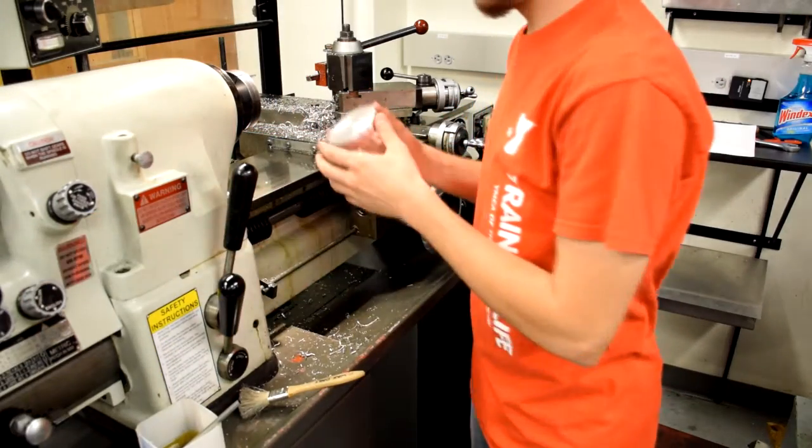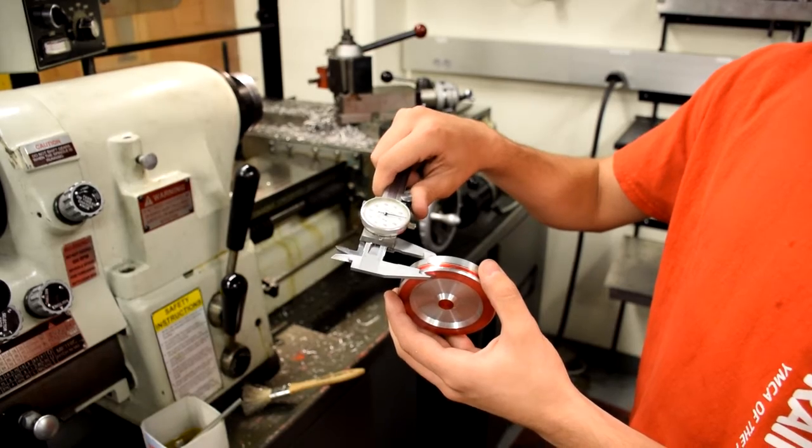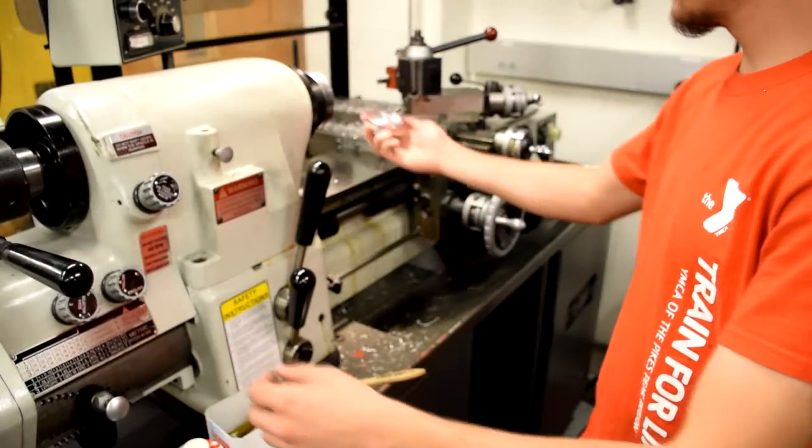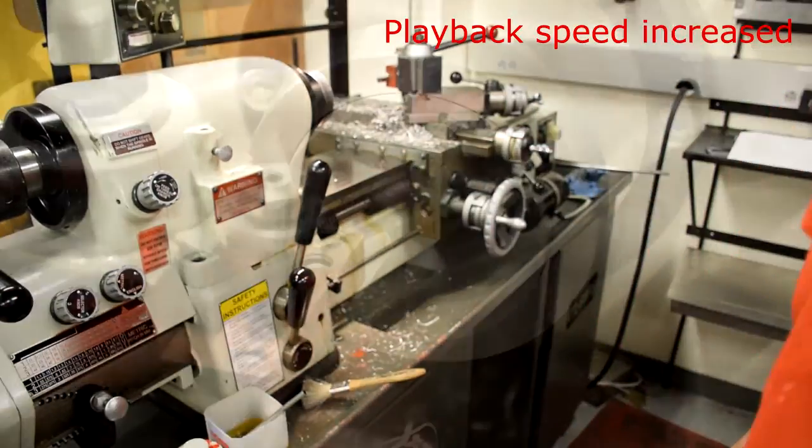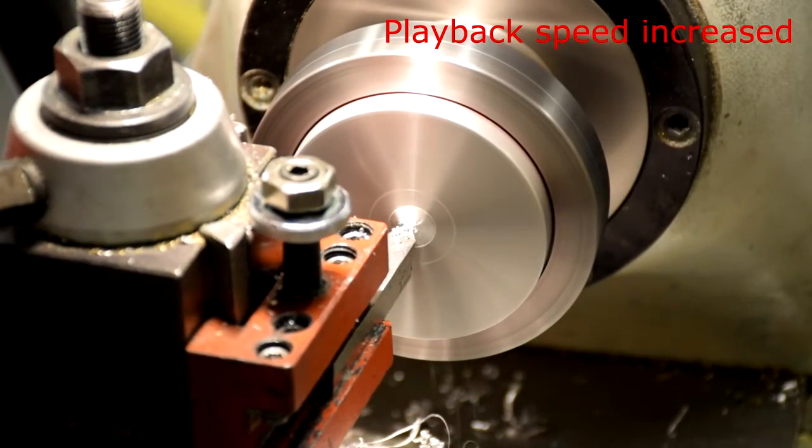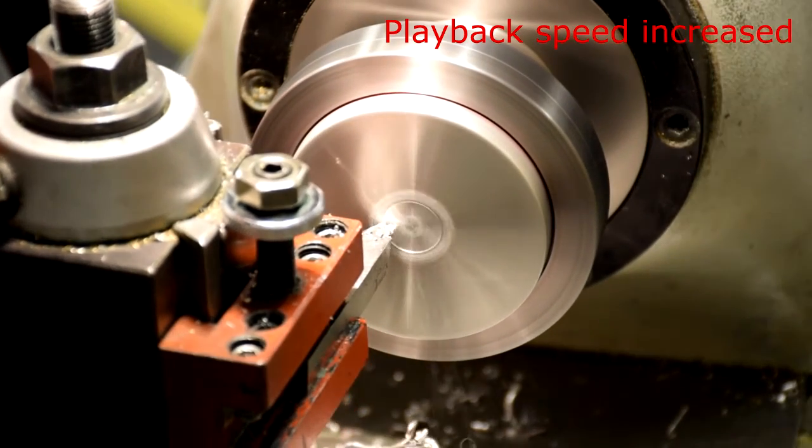Take the part out of the collet and measure its thickness. Subtract 0.375 from that measurement and the result is the amount of material that needs to be removed in order to make your part 375 thousandths of an inch thick. Put the flywheel back in the machine and cut it down to size.